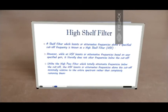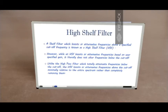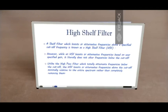A shelf filter which boosts or attenuates frequencies above a specified cutoff frequency is called the high shelf filter. It is opposite of a low shelf filter because a low shelf filter boosts or attenuates below the specified cutoff, whereas the high shelf filter boosts or attenuates beyond the specified cutoff. The high shelf filter will not alter any frequency below the cutoff — it leaves them untouched and only affects frequencies above the cutoff. Unlike a high-pass filter, which totally attenuates frequencies below the cutoff, an HSF boost or HSF cut does not eliminate frequencies below the cutoff — it just leaves them at zero gain.